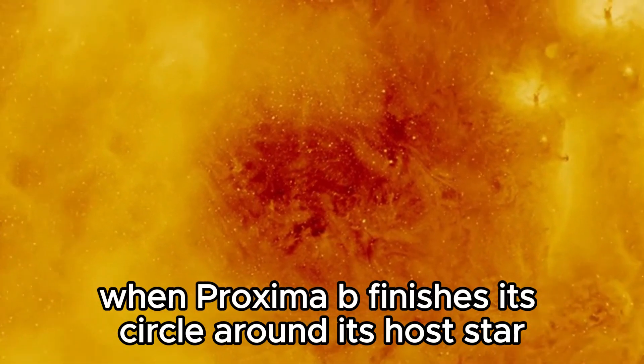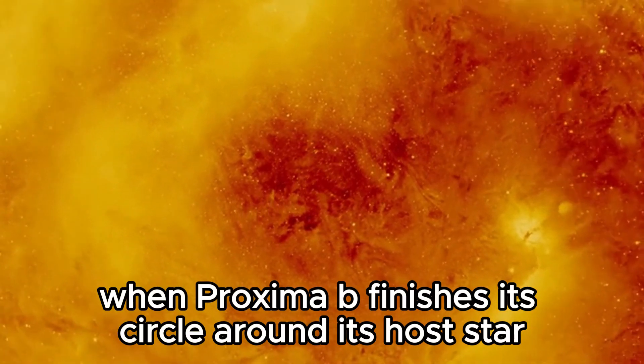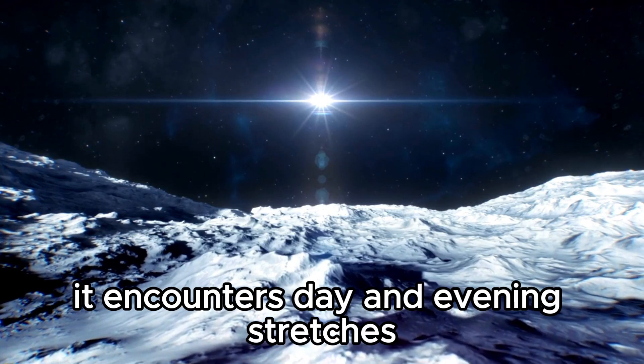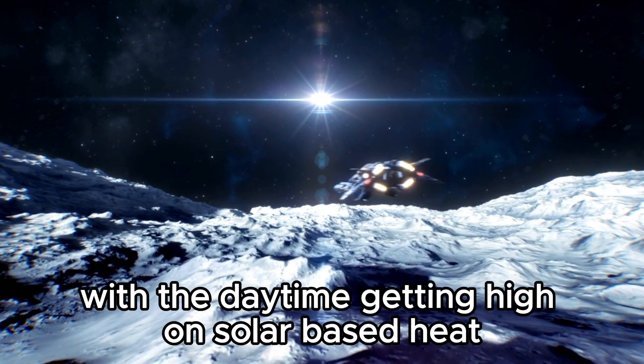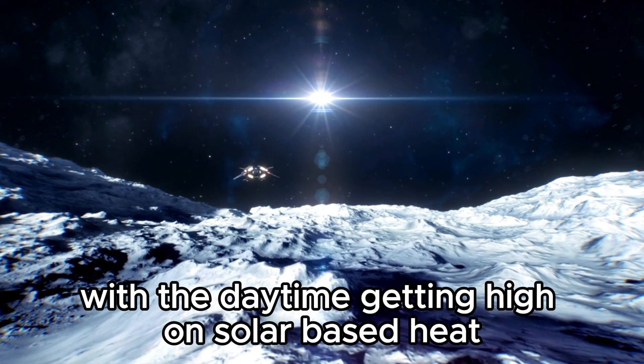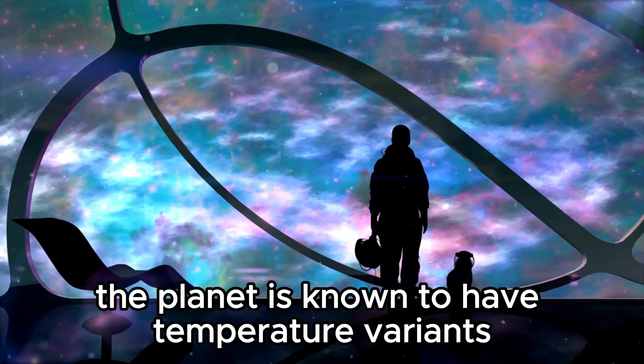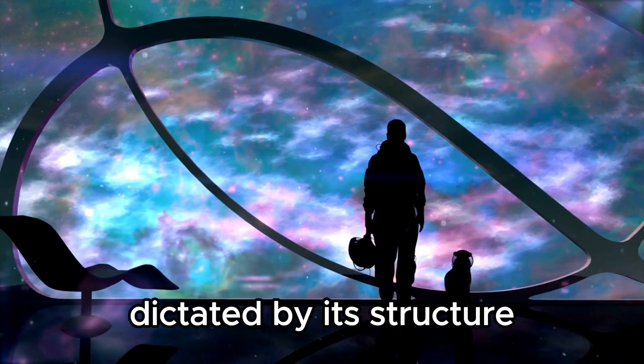When Proxima b finishes its circle around its host star, Proxima Centauri, it encounters day and evening stretches, like what we have on Earth. With the daytime getting high on solar-based heat and the nighttime experiencing coolness, the planet is known to have temperature variance dictated by its structure.